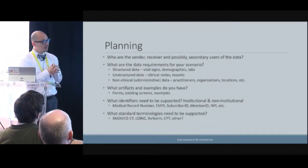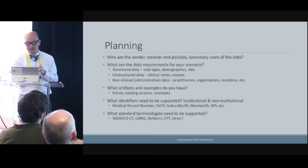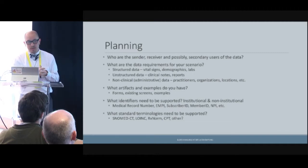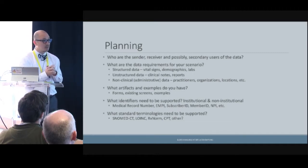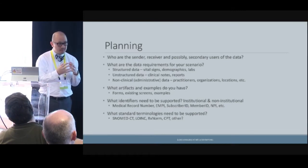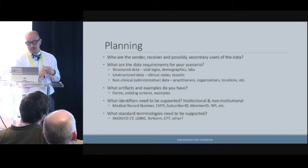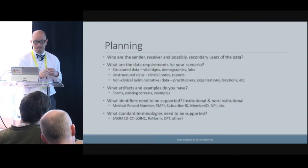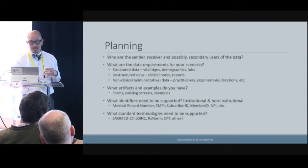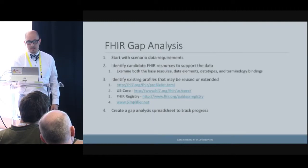It's also important to think about identifiers — whether medical record numbers, EMPIs, or for payer use cases, subscriber and member IDs. You have to think about what terminologies you're going to use. If you're not a terminology geek, find someone to help. Most of the time in the U.S. we're thinking SNOMED codes for conditions, LOINC codes for labs, and RxNorm codes for medications. Gather all this information in advance before you do your scenario.